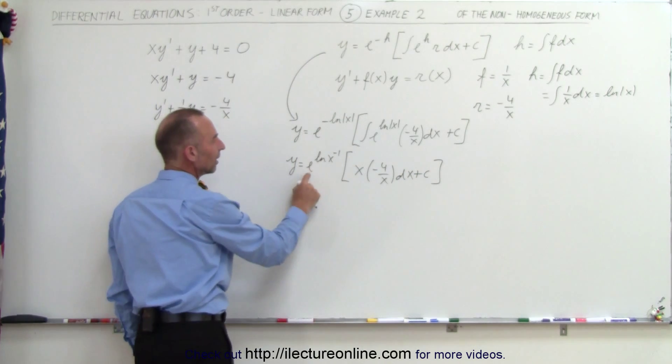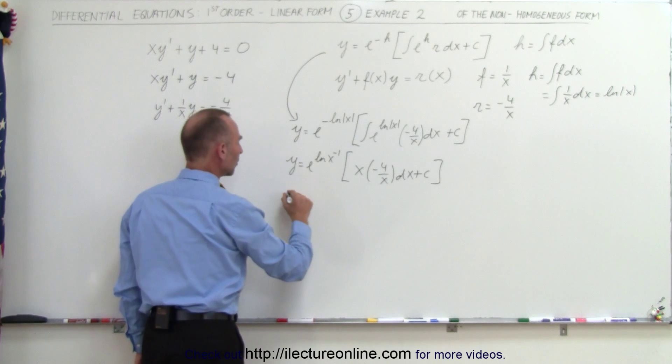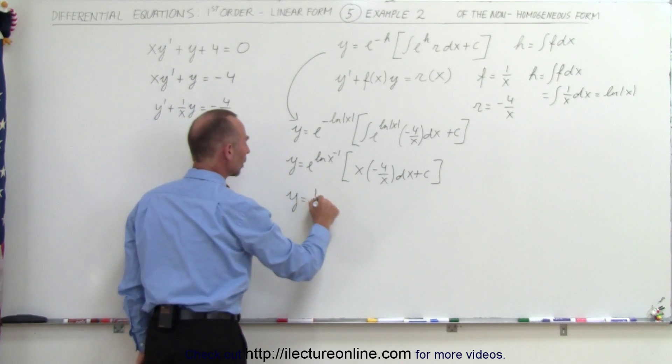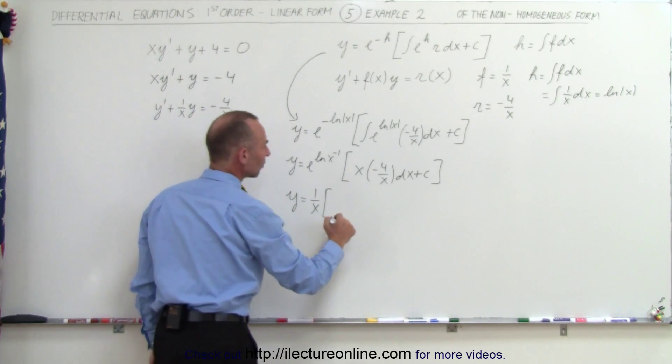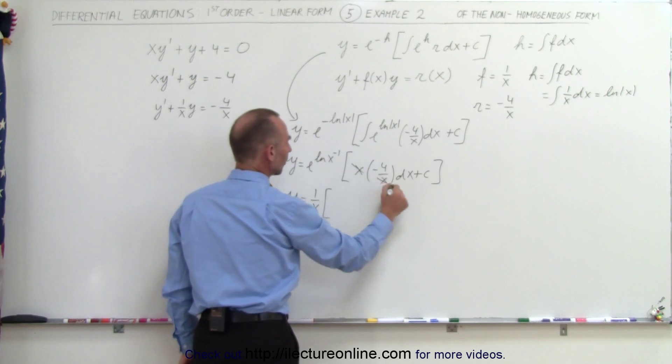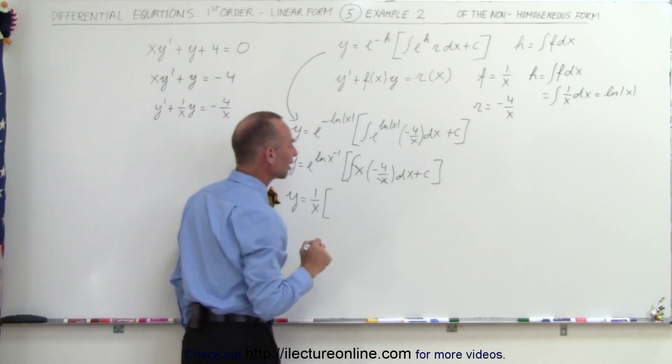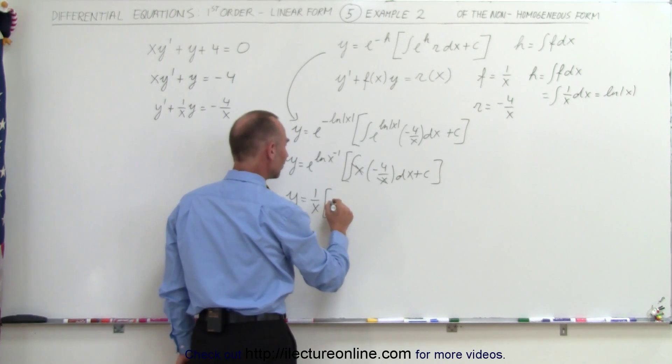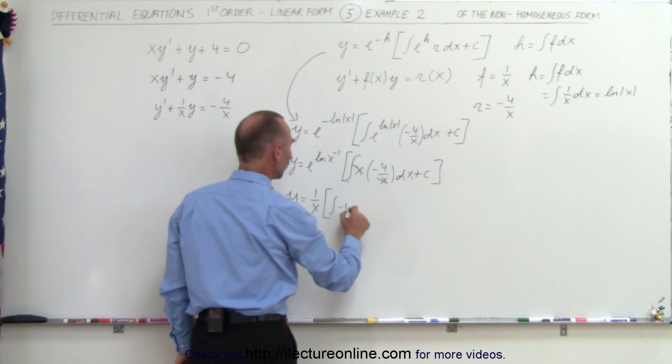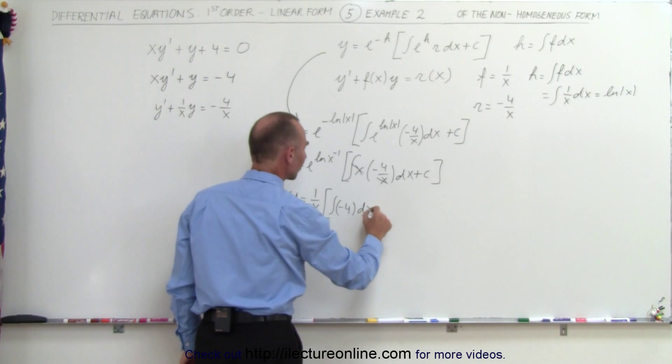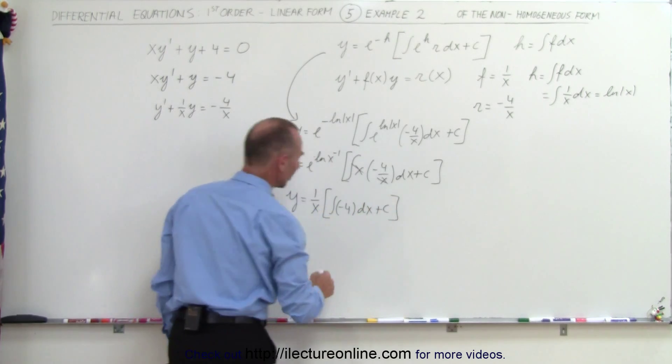All right, now here we can say that this negates the natural log, and this can be written as y is equal to 1 over x, times x and x cancels out. And I forgot my integral sign, didn't I? My integral sign needs to be there, so times the integral of minus 4 times dx, plus a constant of integration.